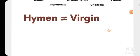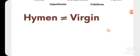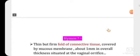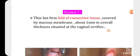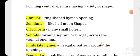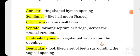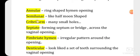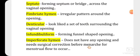As medical professionals, we should know that the hymen is a thin fold of connective tissue covered by mucous membrane, about one millimeter in overall thickness, situated at the vaginal orifice. It covers the orifice and forms a central aperture of various shapes: annular shape, semi-lunar (half-moon) shape, cribriform (many small holes), septate forming a septum or bridge across the vaginal opening, fimbriated with irregular pattern, and infundibular form.